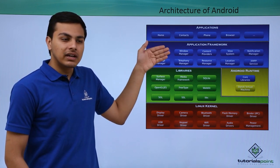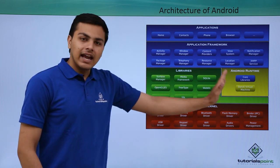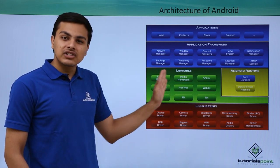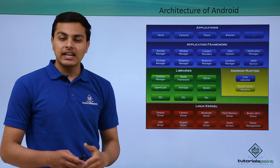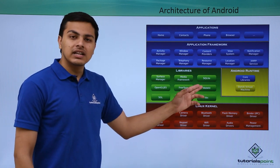Right below the application framework layer is a layer divided into two parts: libraries and Android runtime. These are external libraries used for additional features or functions. You can see here there is one library called SQLite.